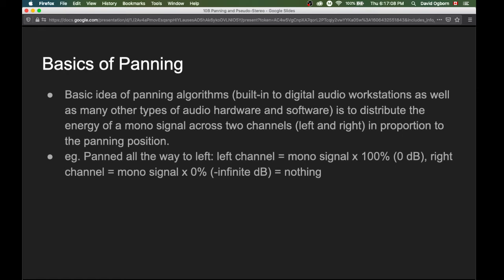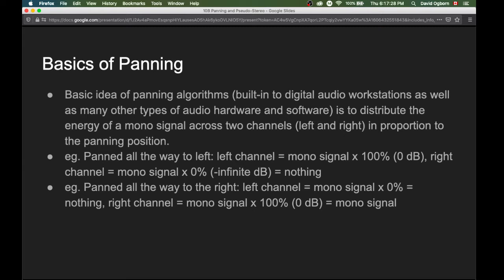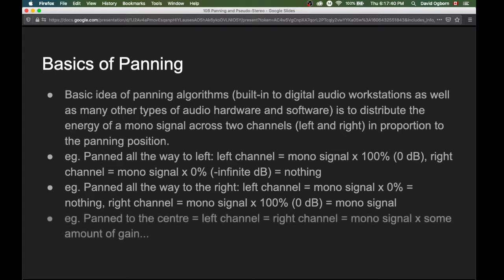For example, if we have a mono signal and we want to hear it all the way to the left in a stereo system, we can put all of it on the left channel and none of it on the right. Conversely, if we want to hear it all the way on the right, we present nothing to the left channel and all of it on the right. And if we want to pan something to the middle, we make the left and right channels the same, presenting our mono signal on both, modified by some amount of gain.